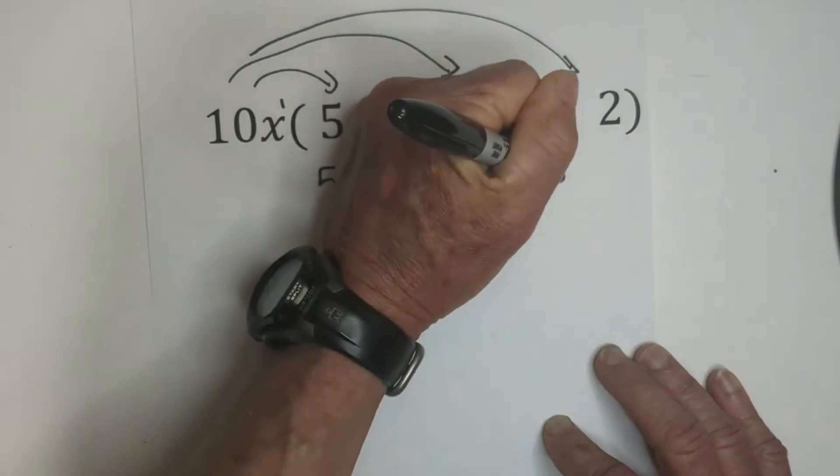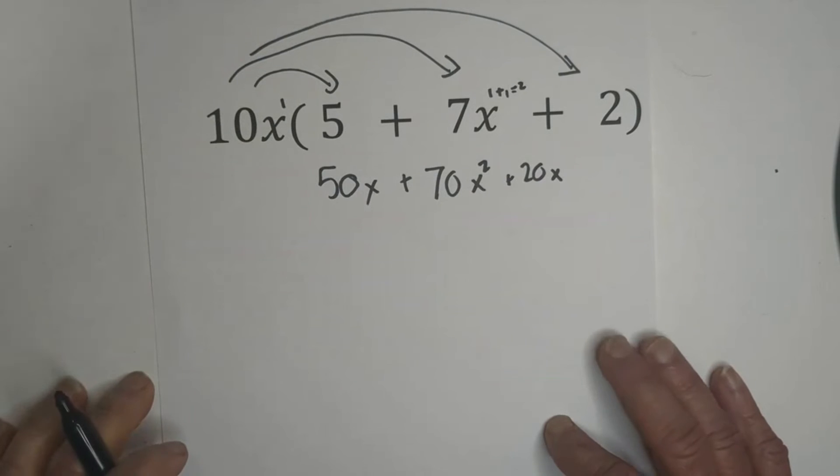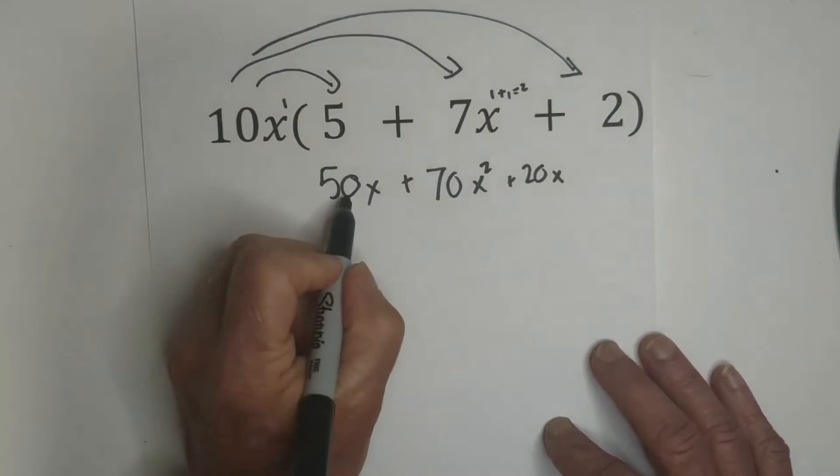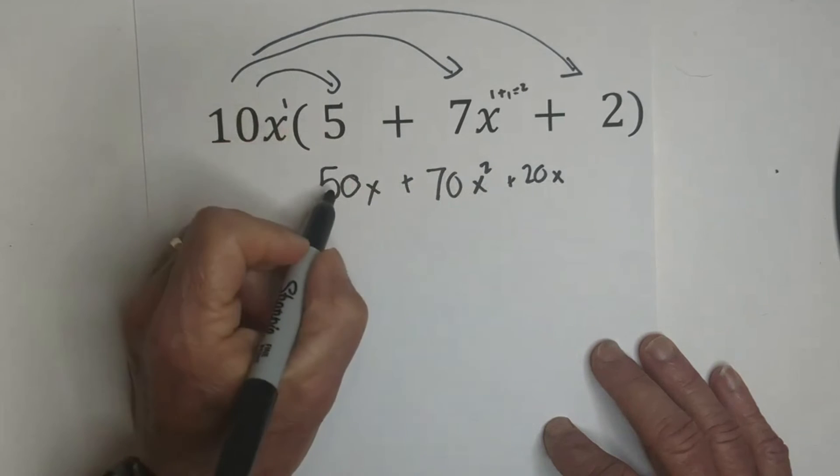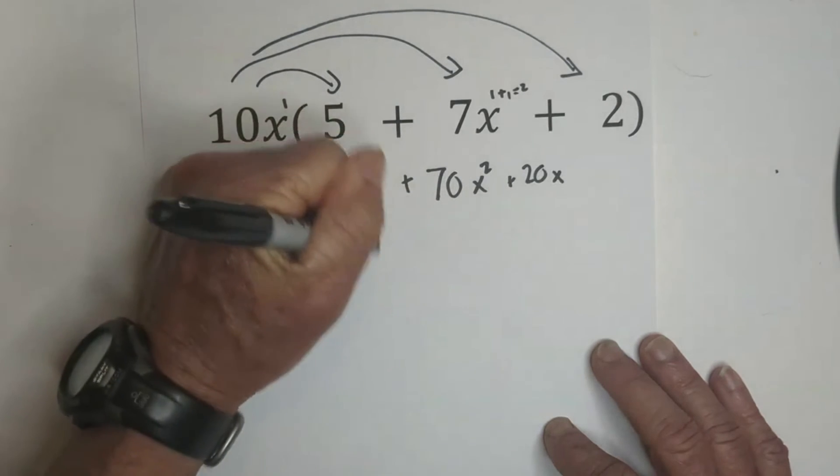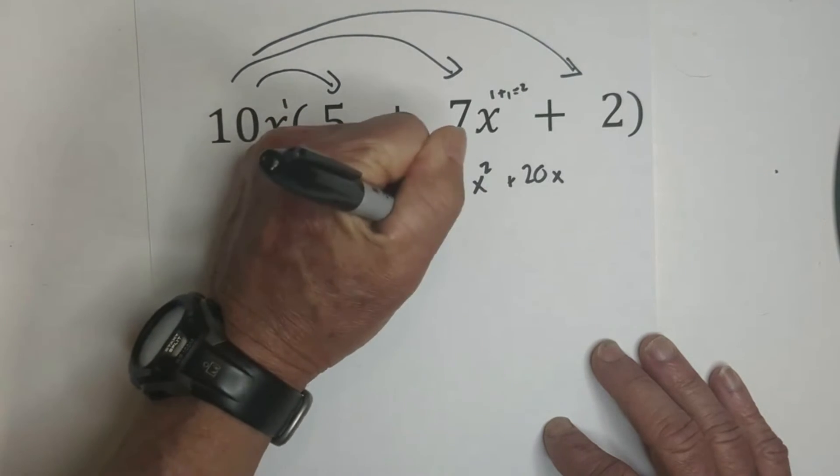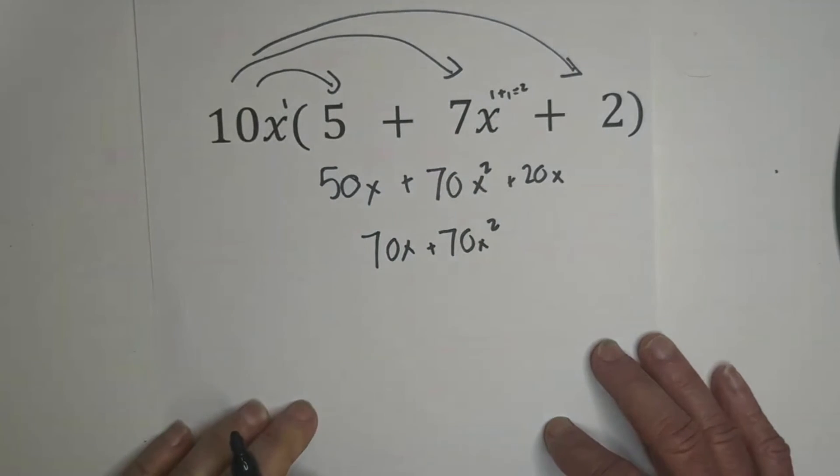Now it looks like we might be able to combine some like terms. We have 50x and 20x, so we can combine the like terms. So we have 70x plus 70x squared.